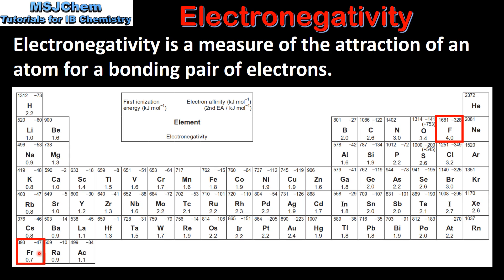The least electronegative element is francium, which is assigned a value of 0.7. Next we'll look at the trend in electronegativity across a period. If we look at period 2, which is lithium to neon, we can see that the electronegativity values increase from left to right, reaching a maximum value at fluorine.